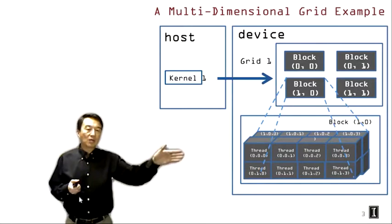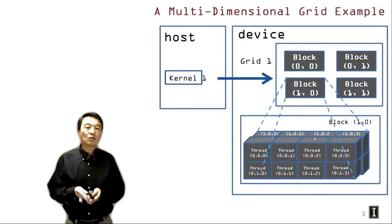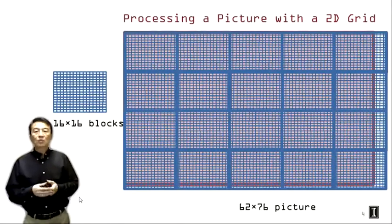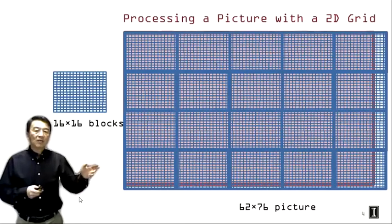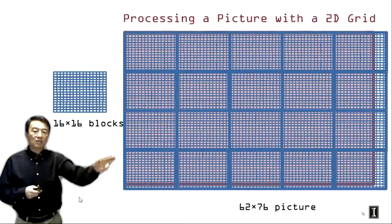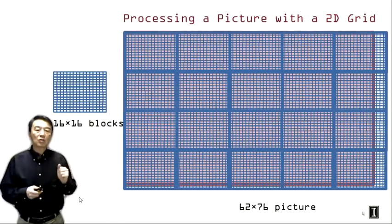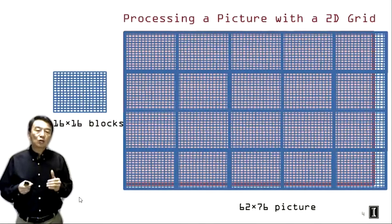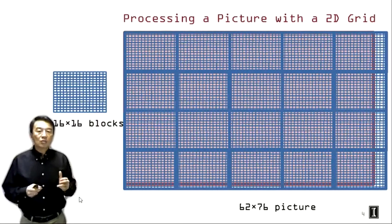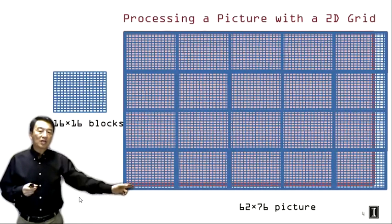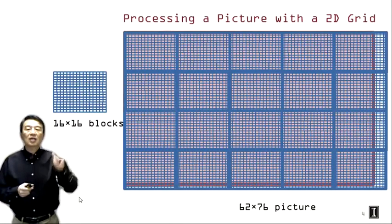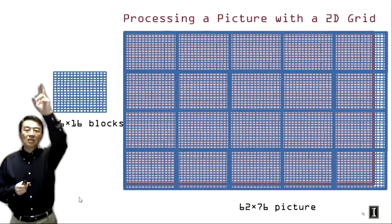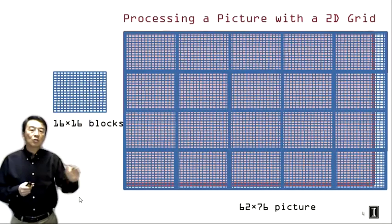Now we're ready to look at a more practical example. We see here a two-dimensional picture of pixels: 62 pixels in the y dimension and 76 pixels in the x dimension. So we will be calling this a 62 by 76 picture, meaning the first number in the configuration is the number of pixels in the y dimension and the second number is in the x dimension. We assume that we're going to be using a 16 by 16 thread block — 16 threads in the y dimension and 16 threads in the x dimension — to process the picture.